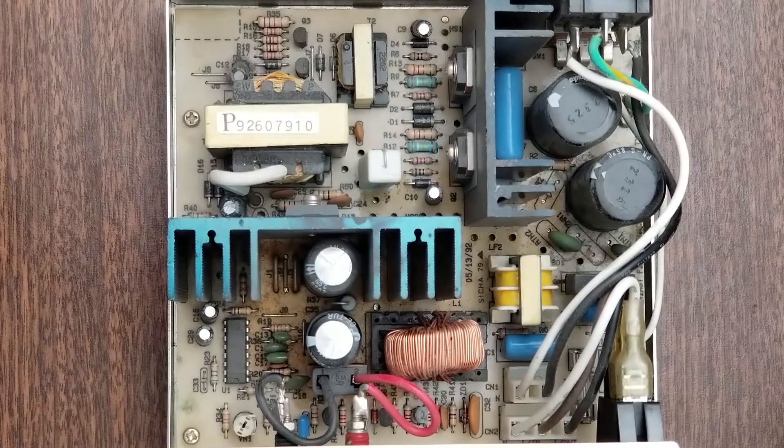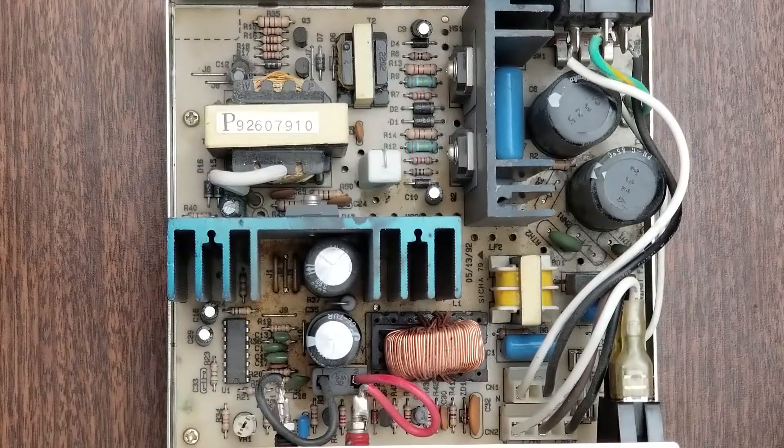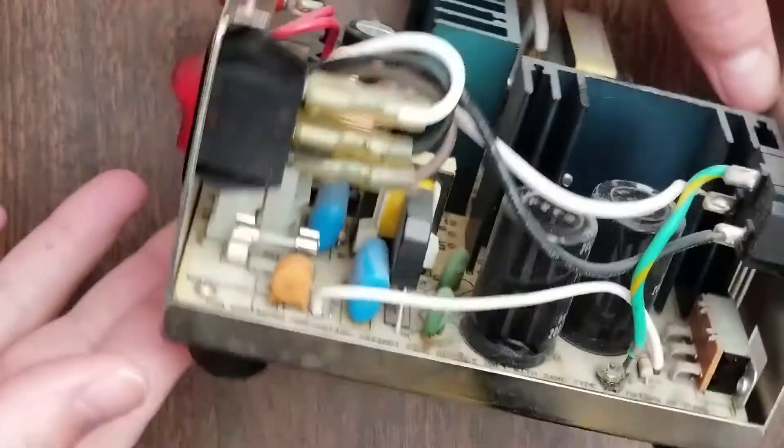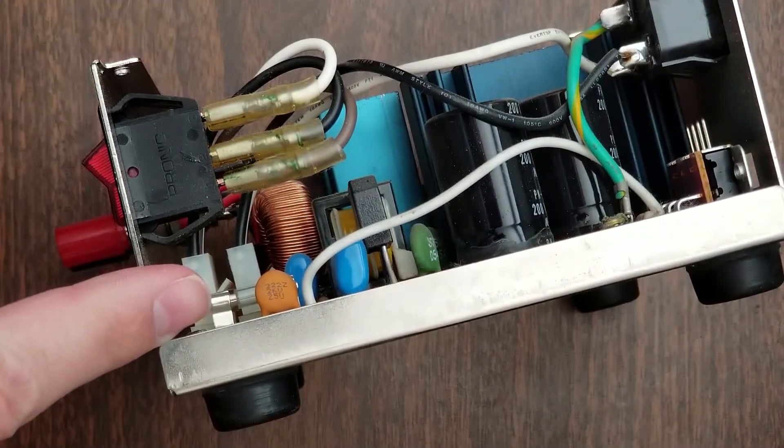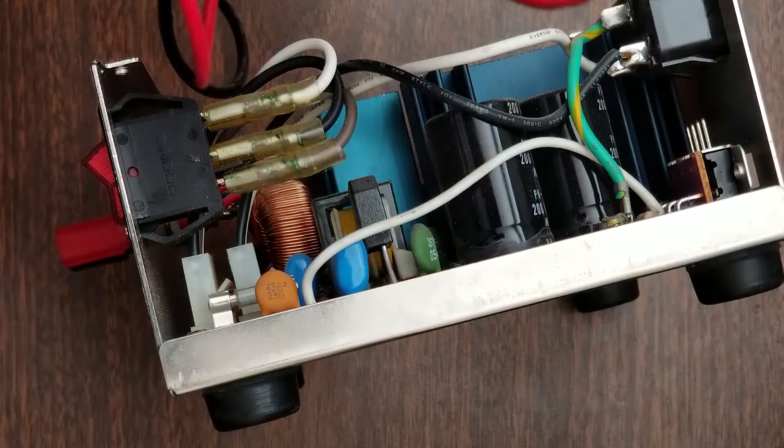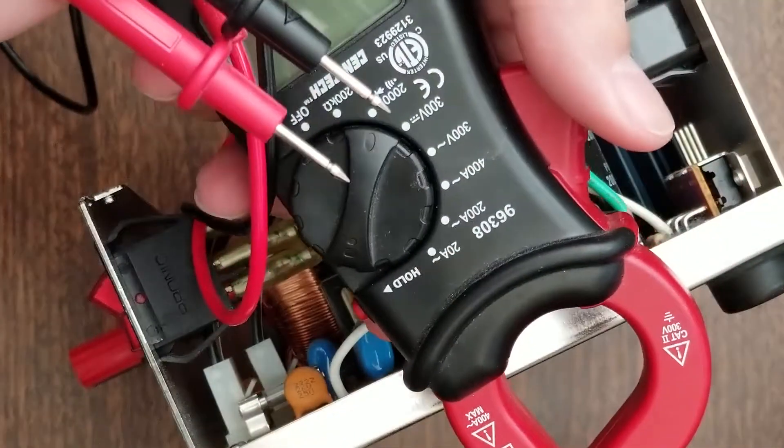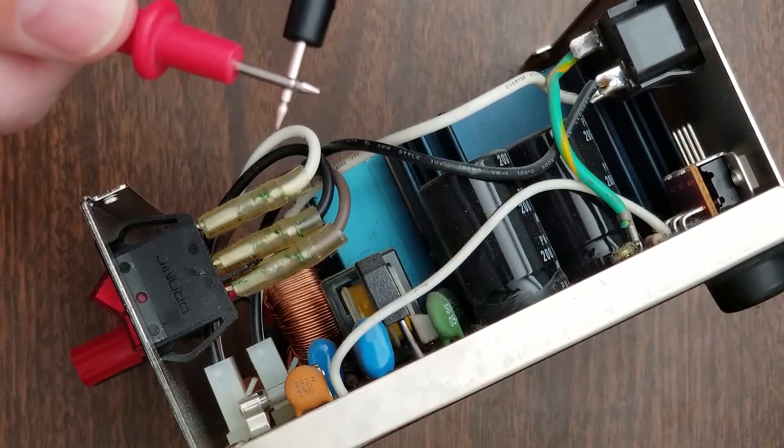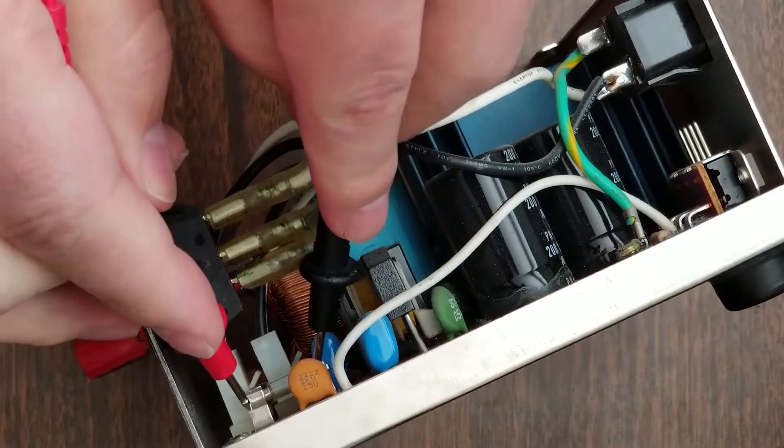Alright, here we go. So at first glance, nothing tremendously obvious. One thing we might want to check right down here is the fuse. We'll set the multimeter to give us a tone if there's a connection. So you can hear the tone, then that means there's a connection there. So we'll just check here.